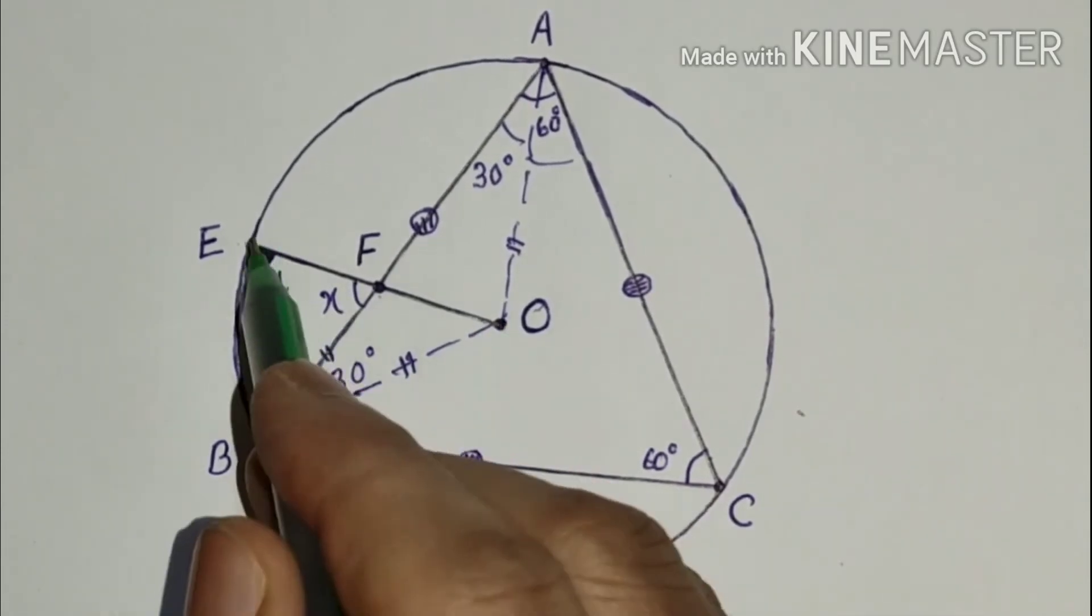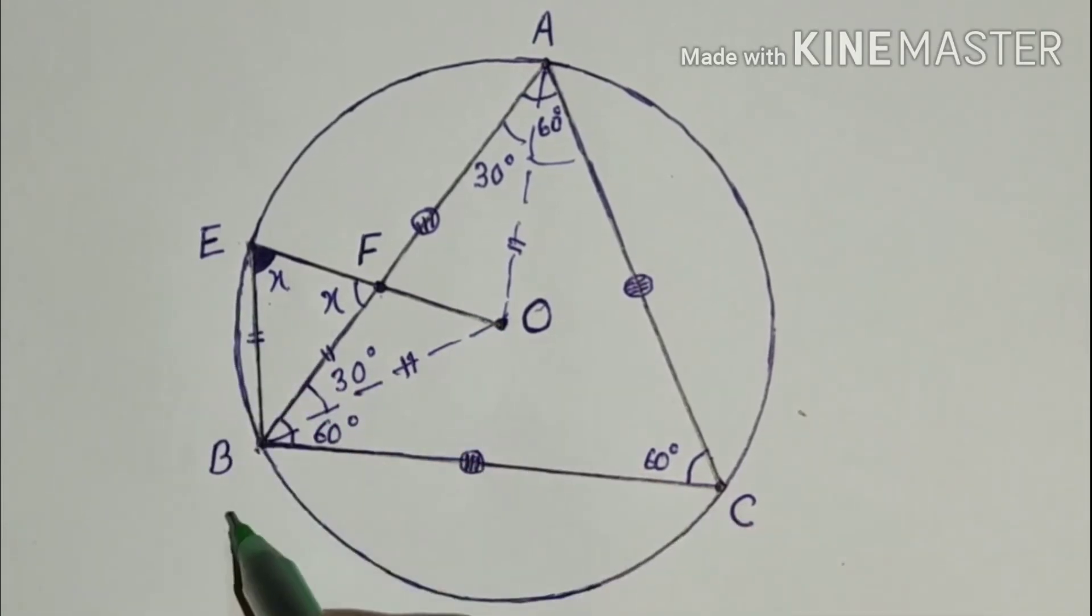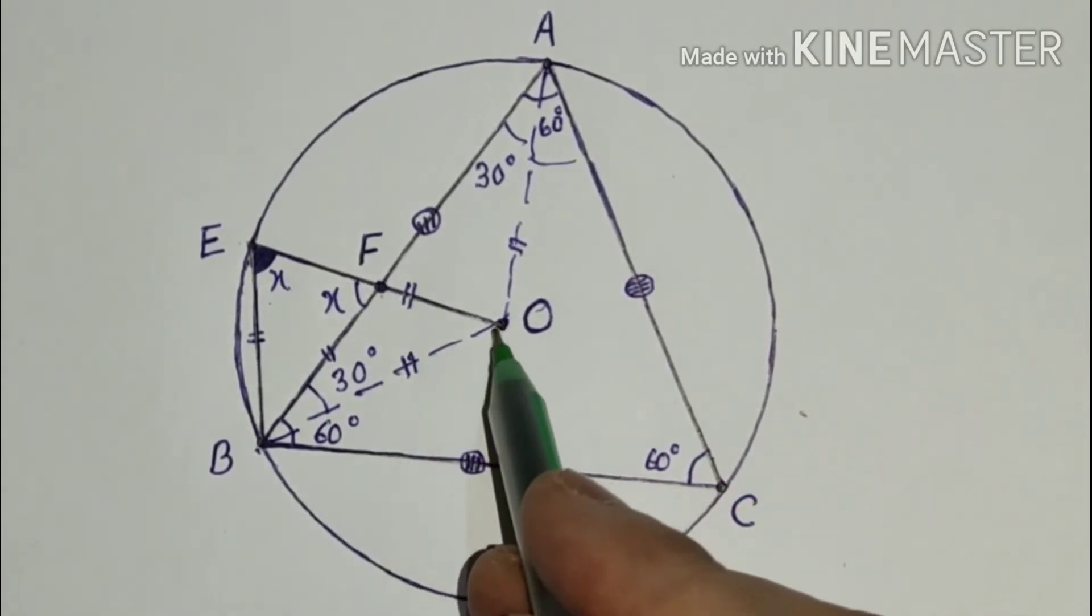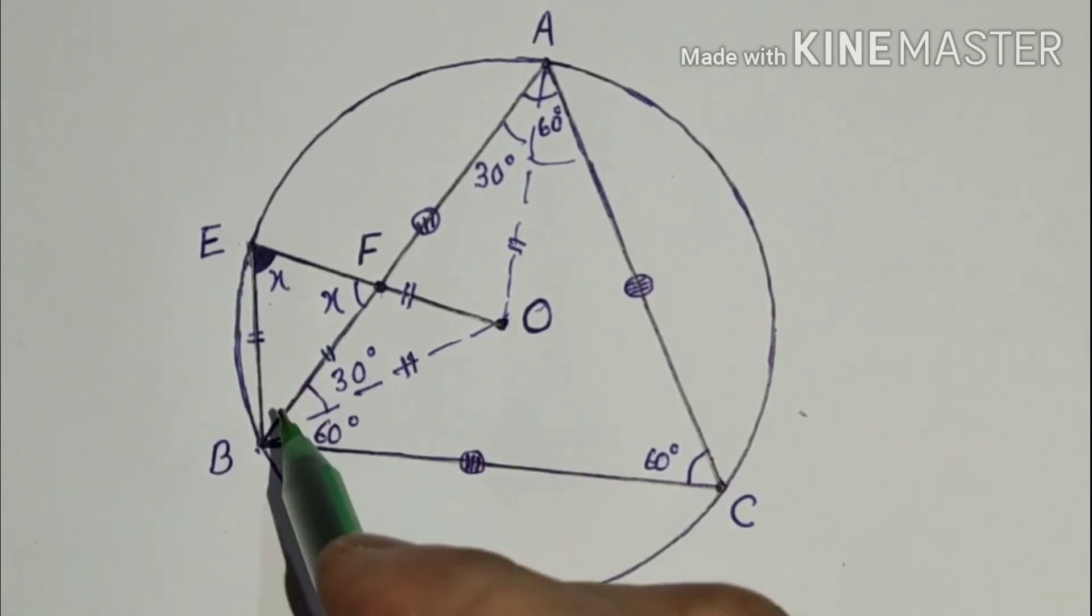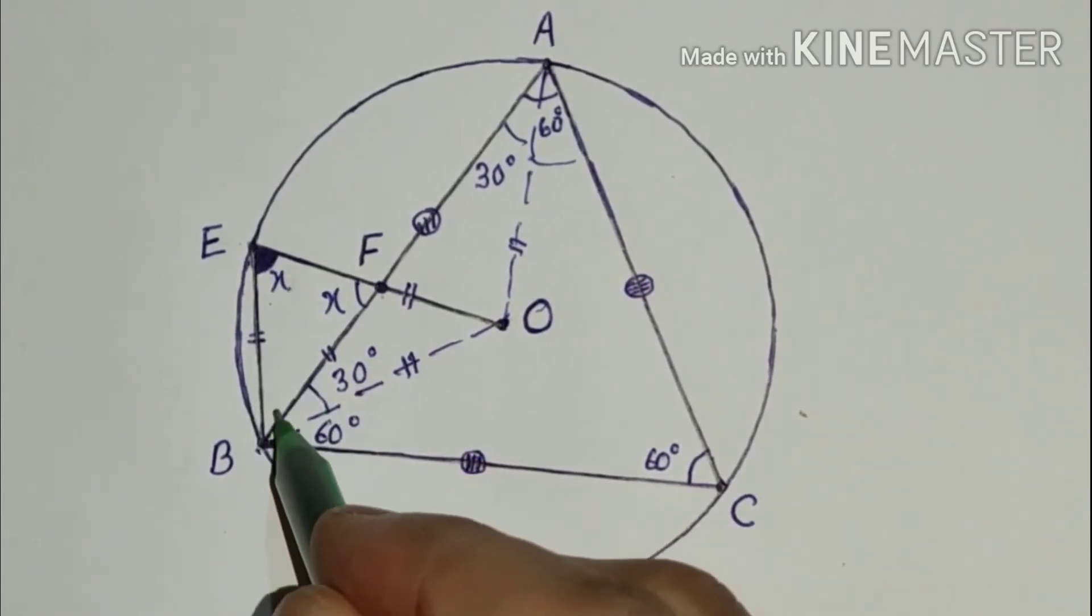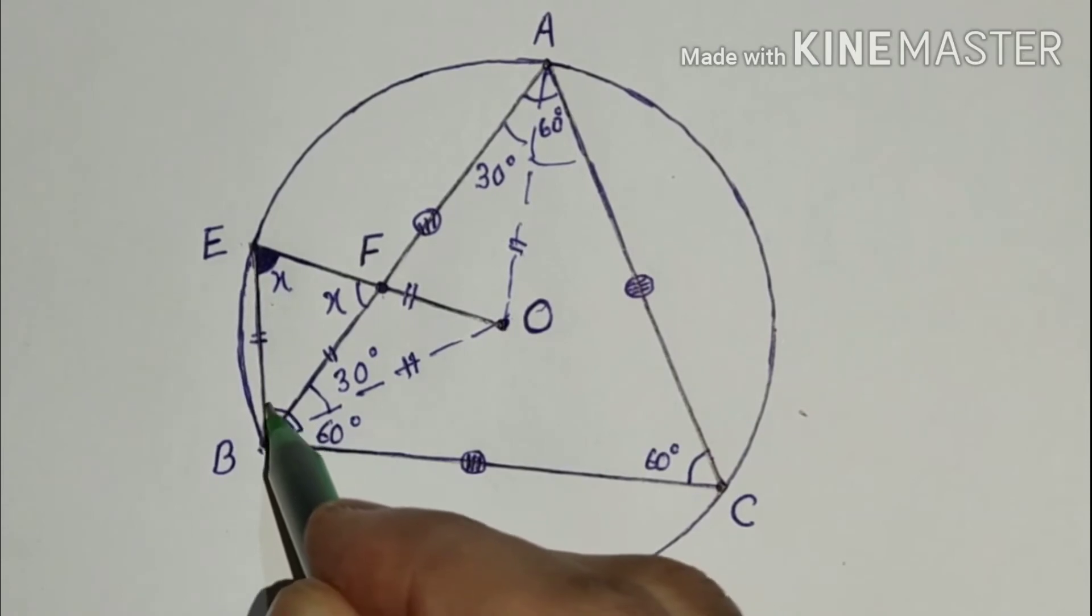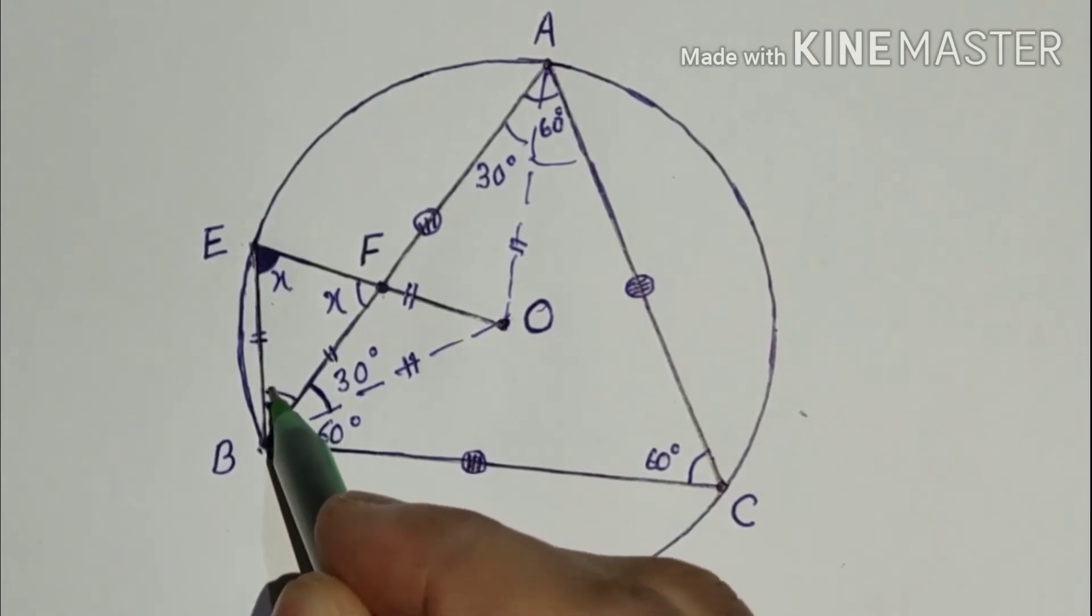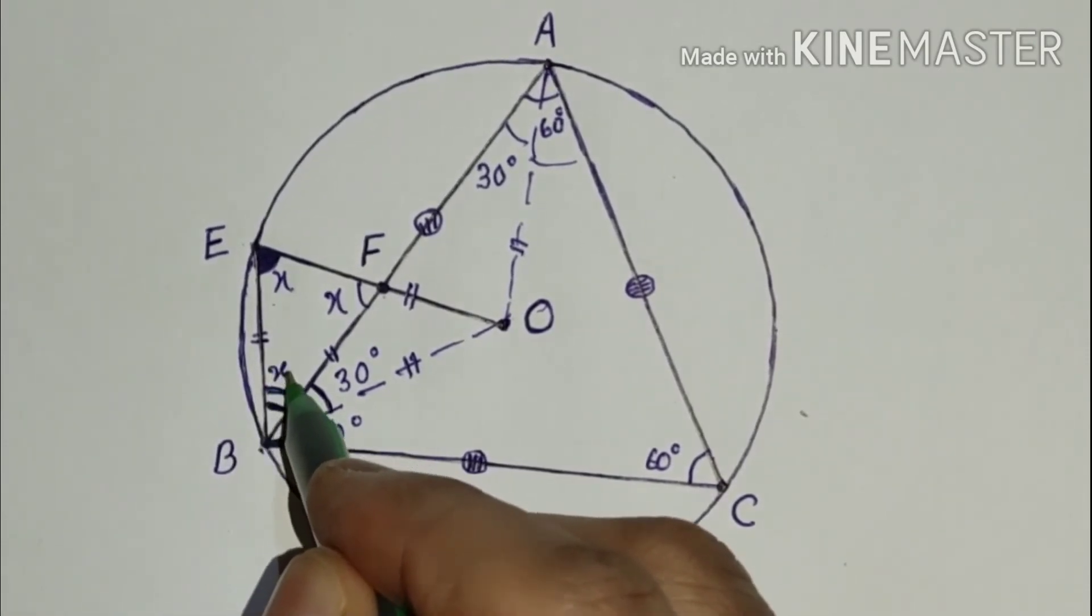And OE is equal to OB. Both are radii. It means OE is equal to OB, so if this is X, this whole thing is X. But this part is 30 and this is X, so this remaining part will be X minus 30.